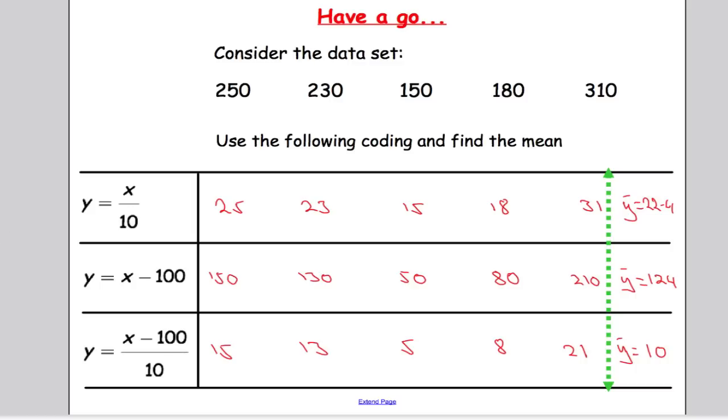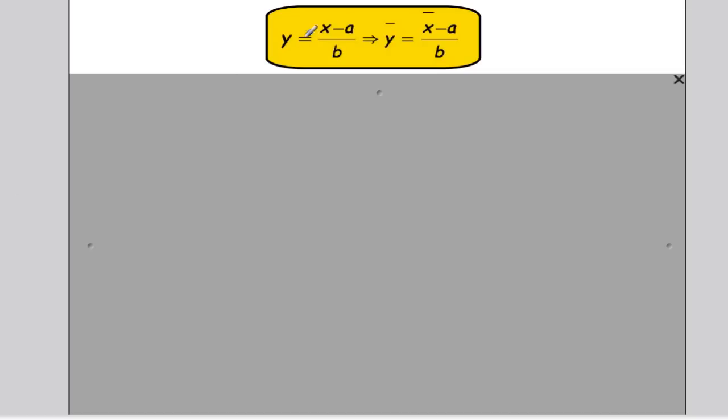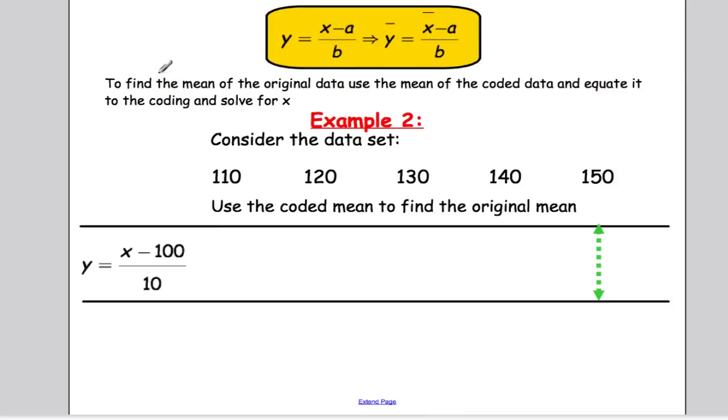Now coding has a pretty unique feature here. If you consider that y equals x minus a over b, well that actually means that y bar equals x bar minus a over b. It tells me that if I have the mean of the coded data and I want the mean of the original data, well I can just set up a little equation and then solve for x bar. To find the mean of the original data, use the mean of the coded data and equate it to the coding and solve for x, or x bar if you like.